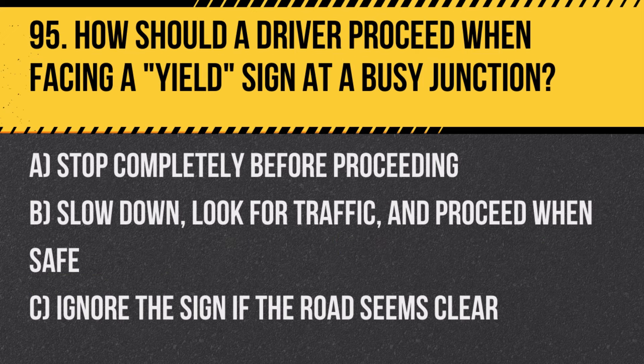Question 95: How should a driver proceed when facing a yield sign at a busy junction? A. Stop completely before proceeding. B. Slow down, look for traffic, and proceed when safe. C. Ignore the sign if the road seems clear. Answer: B. Slow down, look for traffic, and proceed when safe. Yielding correctly helps manage traffic flow and prevents accidents.